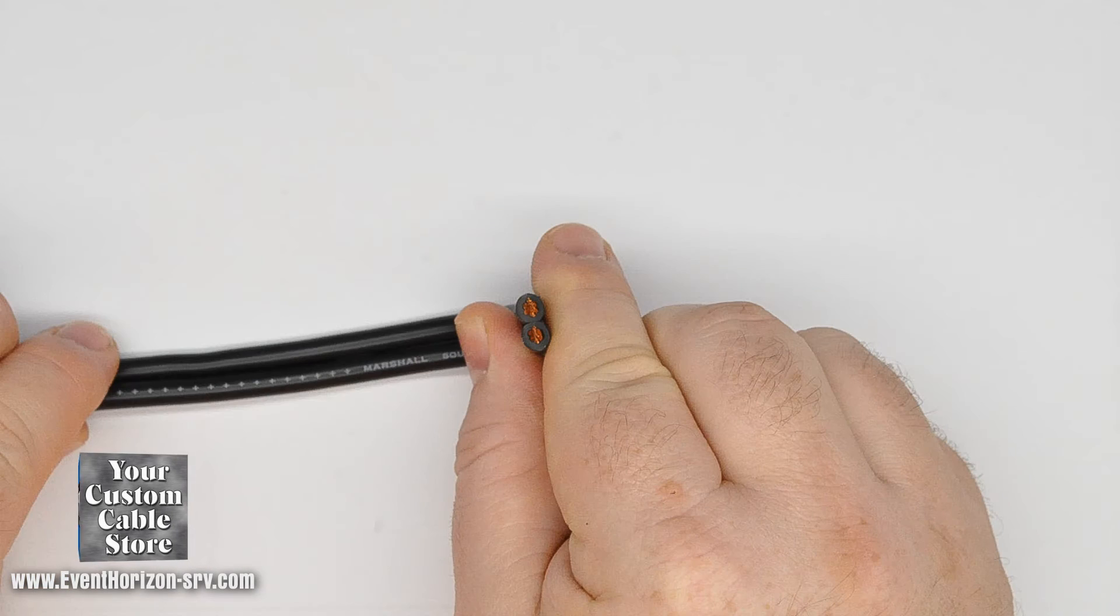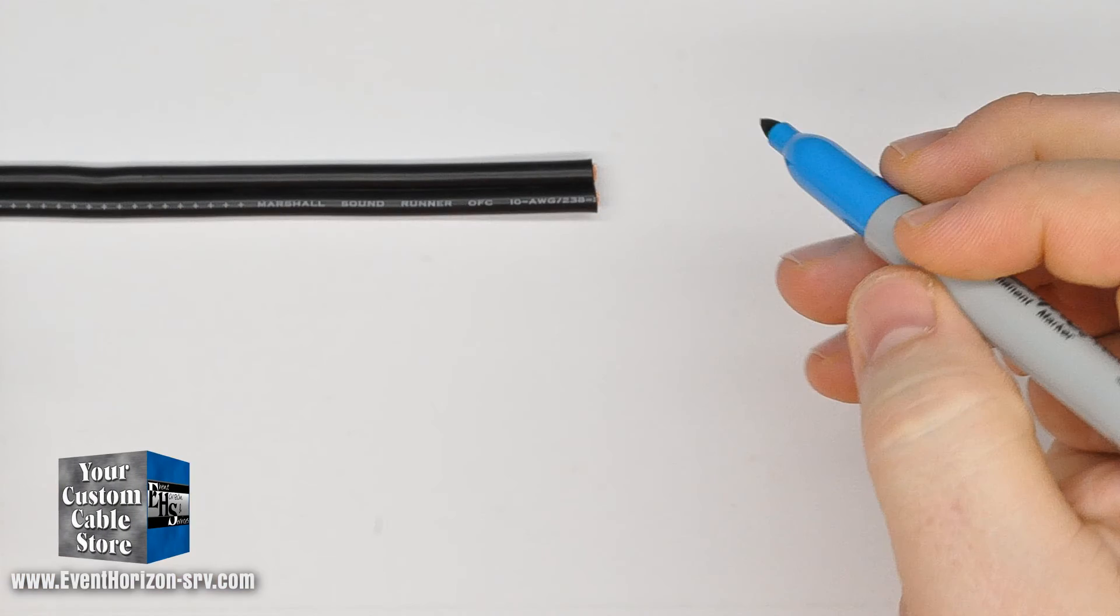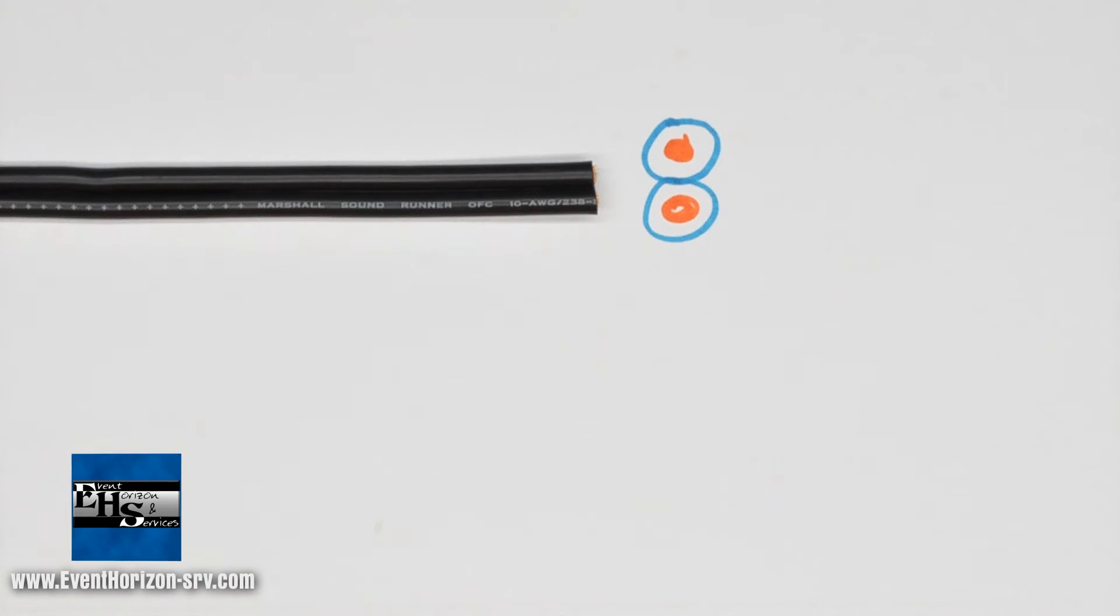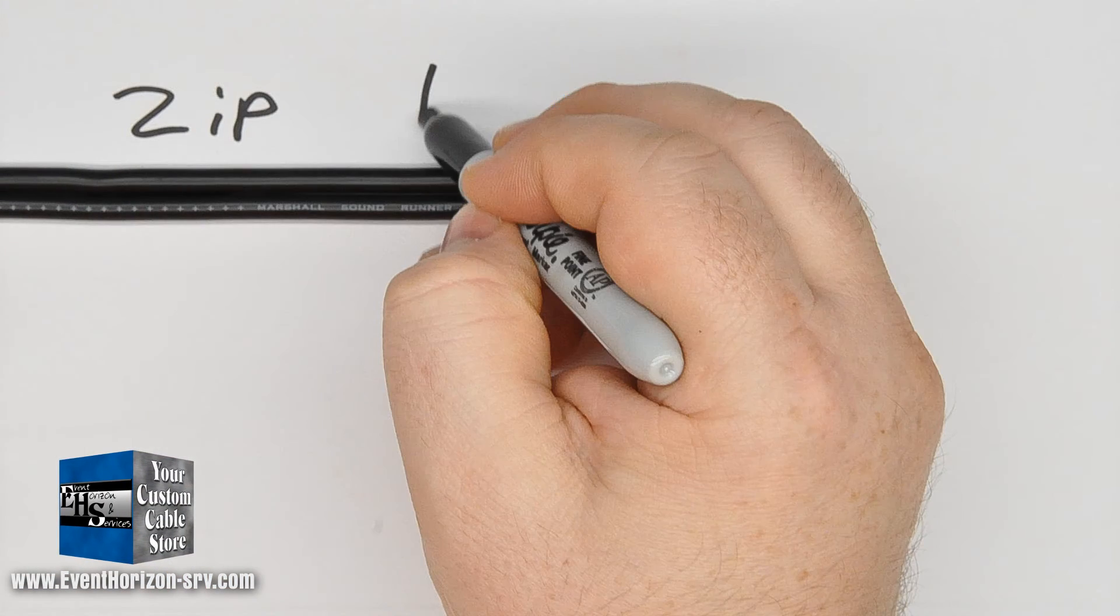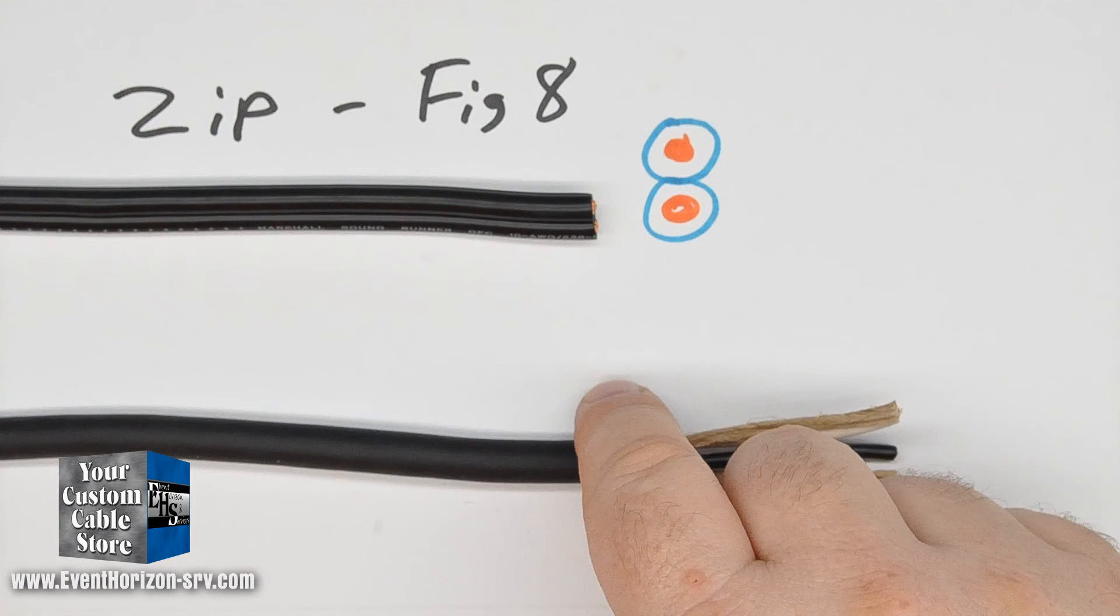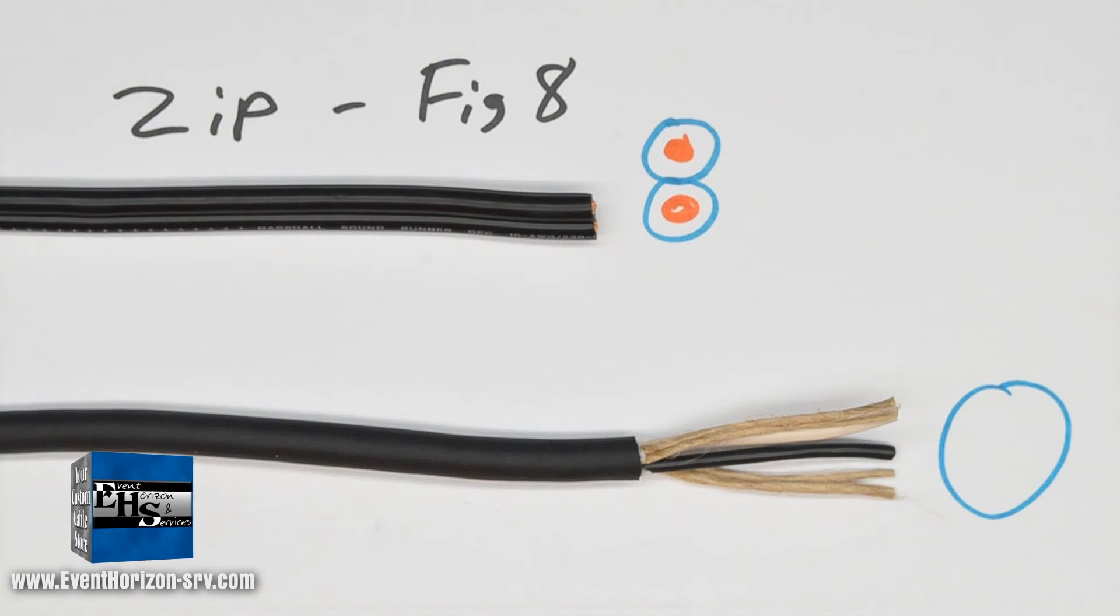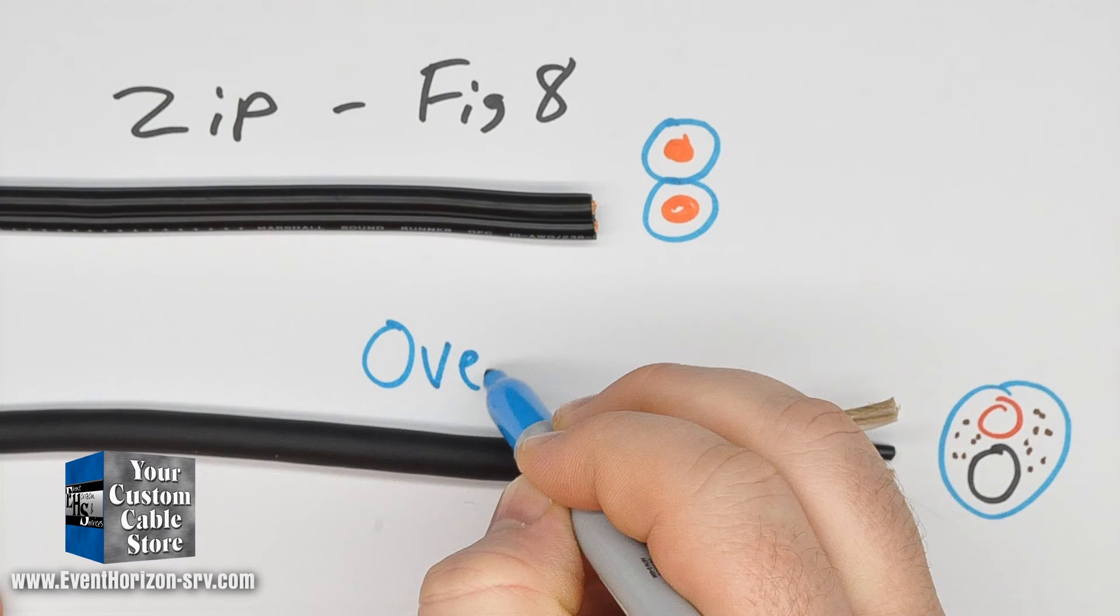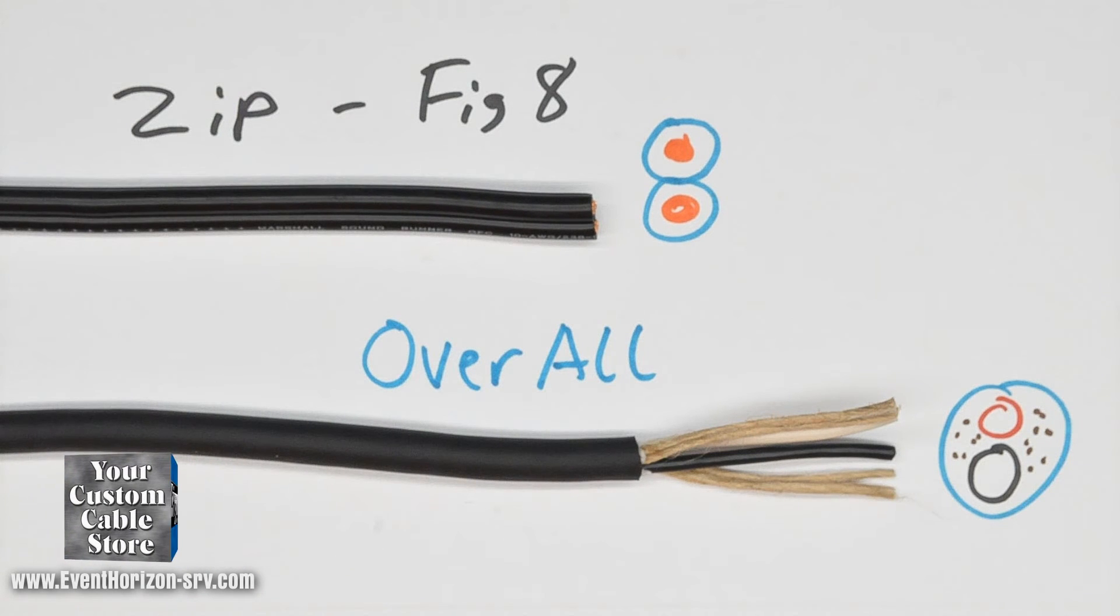Speaker cables commonly come in two forms: zip cord, also called figure eight, where the two jacketed wires are bonded together with the plastic jacketing, and overall jacket where two or more conductors are enclosed in a jacket or an overall jacket to make a mostly round cable.